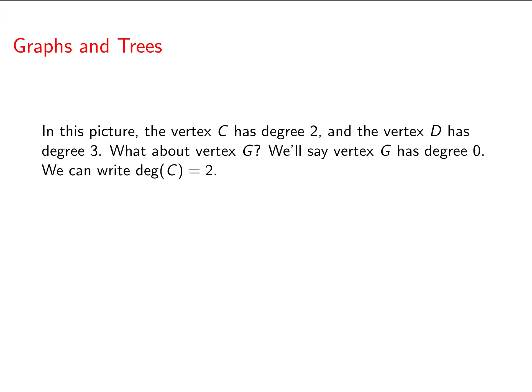And we'll write deg(C) = 2. What should we say about vertex A? We're going to say it has degree 4 because we want to count the loop twice.